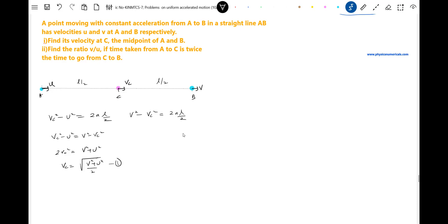Now let's write what is asking: find the ratio of v by u if the time taken from A to C is twice the time taken to move from C to B. For path AC, what is the equation? L by 2 is equal to ut plus half at squared, with constant acceleration.